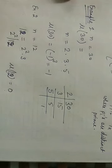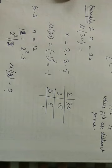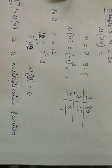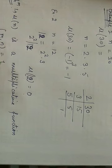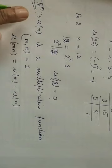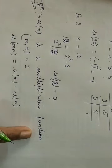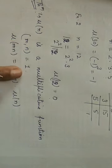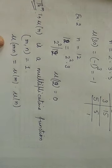Now we have to prove that μ(n) is a multiplicative function. To show a function is multiplicative, we need to show that if gcd(m, n) = 1, then μ(mn) = μ(m)·μ(n). The value of μ depends on the type of the numbers m and n. We will consider three cases.